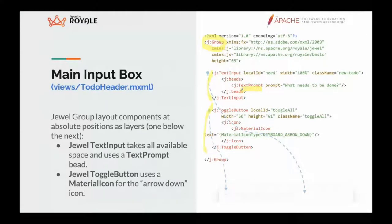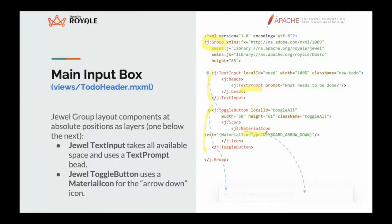We use a text prompt bead, which is one of the parts not baked into the text input itself but something we add only when we want a text prompt in a text input. For the toggle button we have a material icon — a component that we add to the icon attribute.